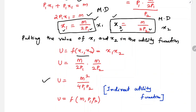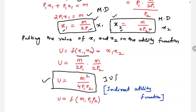So utility is a function of M, p1, and p2, where p1 is the price of x1 and p2 is the price of x2. This is called the indirect utility function because utility is expressed as a function of money income and prices, not directly of quantities.